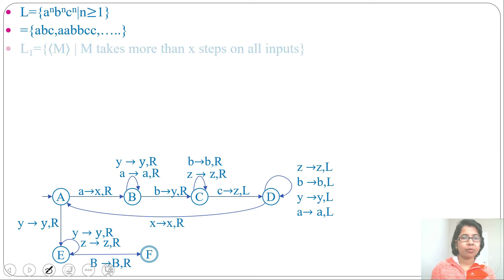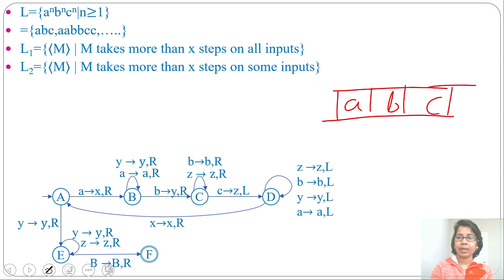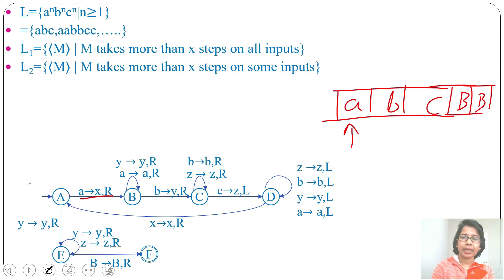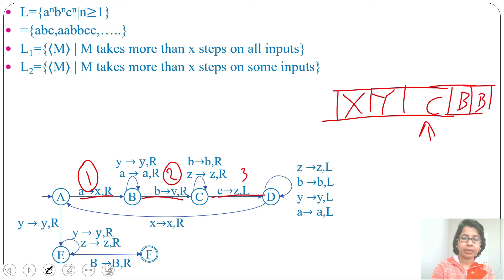Let me consider two languages: L1 — M takes more than X steps on all inputs; L2 — M takes more than X steps on some input. Let me consider the string ABC and trace it on this Turing machine to count how many steps it takes. Initially the read-write pointer will be at the start. Step 1: A changes to X and moves right. Step 2: B changes to Y and moves right. Step 3: C changes to Z and moves left.